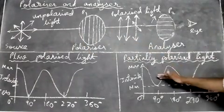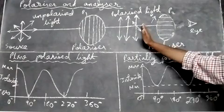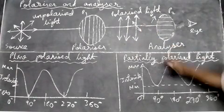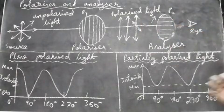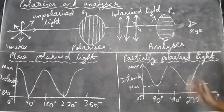Partially polarized means the light will not be completely polarized. So intensity will change as you rotate the analyzer. This is about plane polarized light and partially polarized light. Thank you for watching.